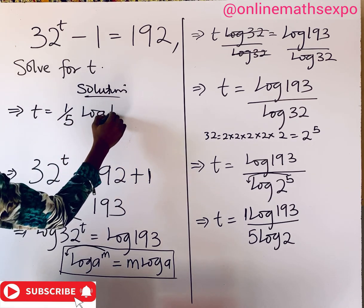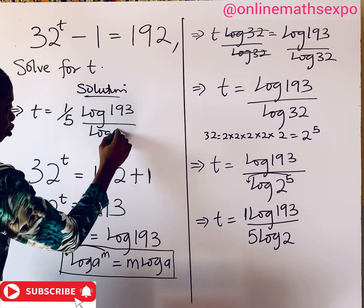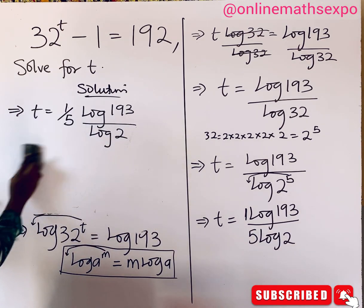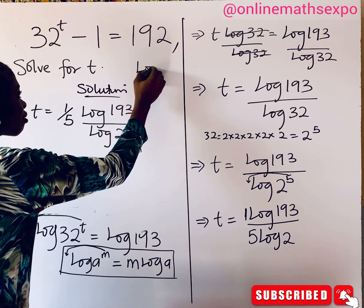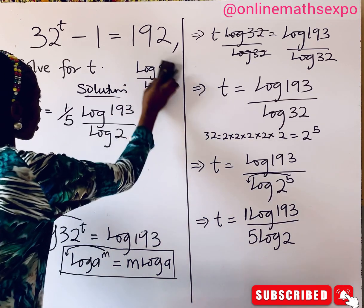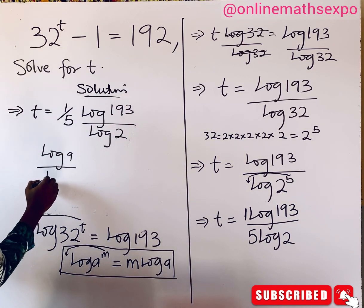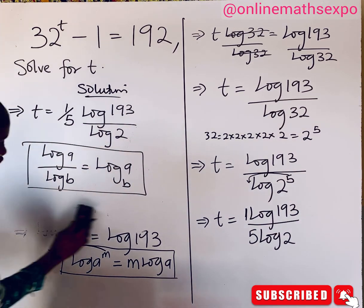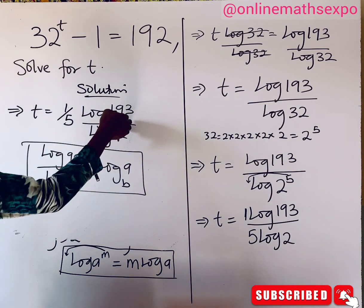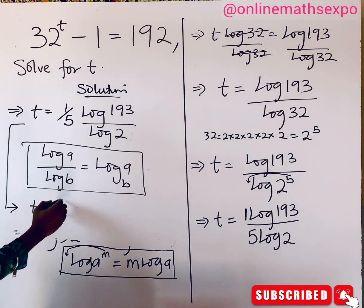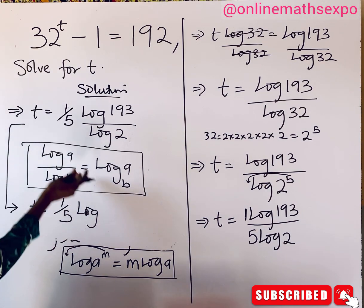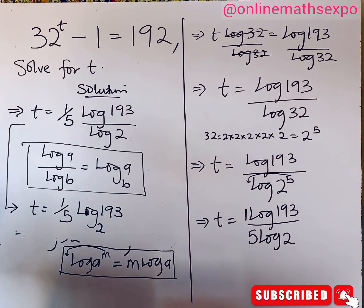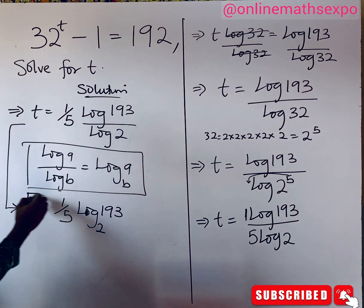This gives us t as one-fifth times log 193 all over log 2. Now, remember the change of base rule, which says log a all over log b equals log base b of a. Applying this rule here, log 193 over log 2 becomes log base 2 of 193. So t equals one-fifth times log base 2 of 193, and this is the simplified form of t.